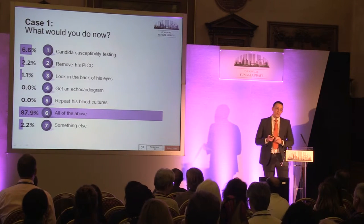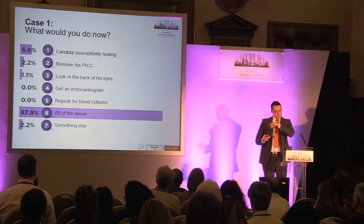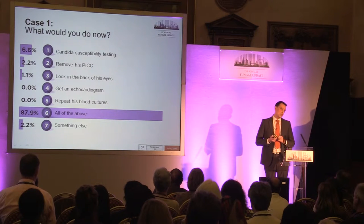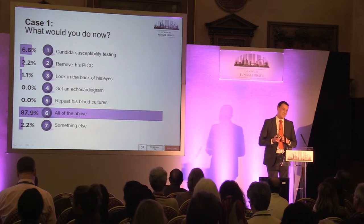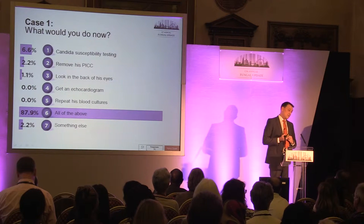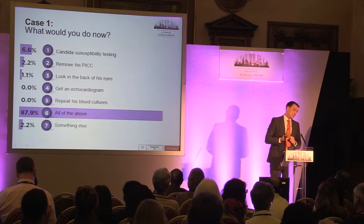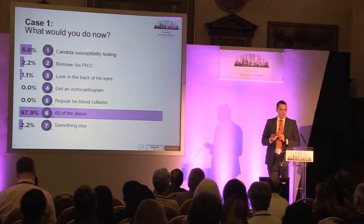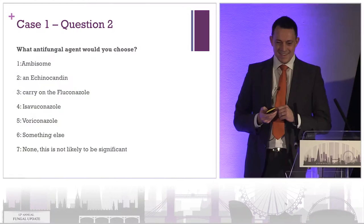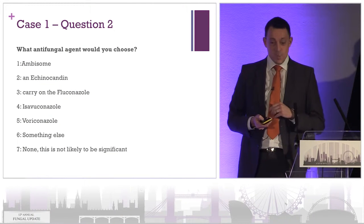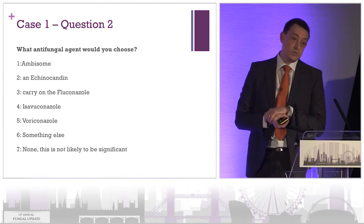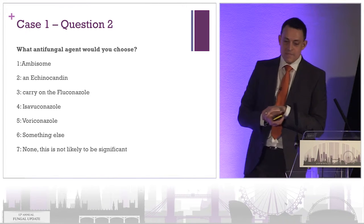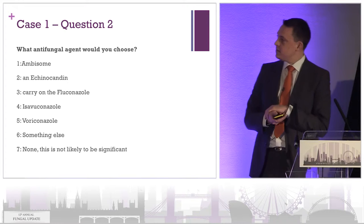I would probably do something else as well as doing all of the above. Someone suggested changing his treatment — exactly, I think he needs an antifungal. Fluconazole is an antifungal, but he needs a different antifungal, perhaps. So here's the next question: what antifungal would you use? Would you use amphotericin, an echinocandin, carry on with fluconazole, switch to isavuconazole or voriconazole, do something else, or stop his antifungals entirely?